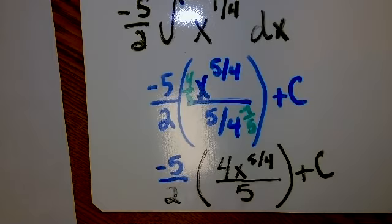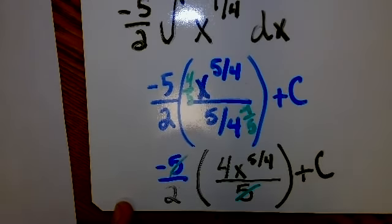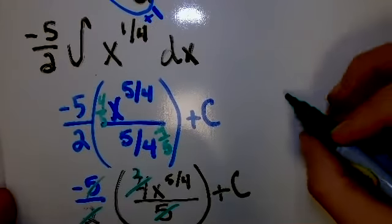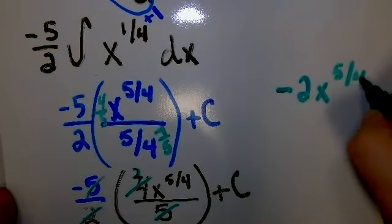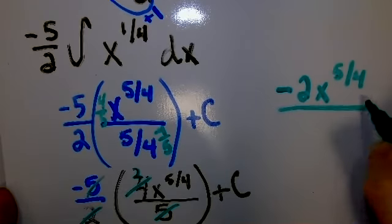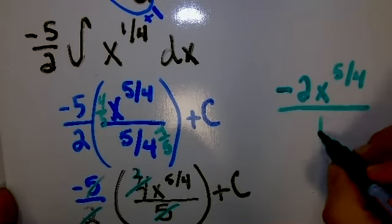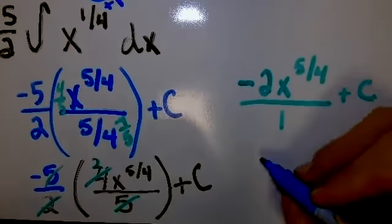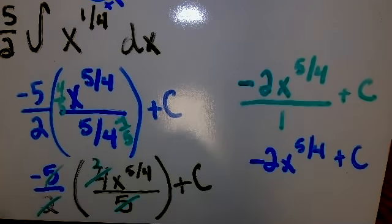Right now, I can just simplify this. So of course, five-over-five, that will just cancel out. I still have that negative there, though. And then four-over-two will reduce. So I end up with a negative two-x to the five-fourths over, and on the bottom, I cancelled both of these out. So it's just going to be one plus c, which I can just make negative two-x to the five-fourths plus c.